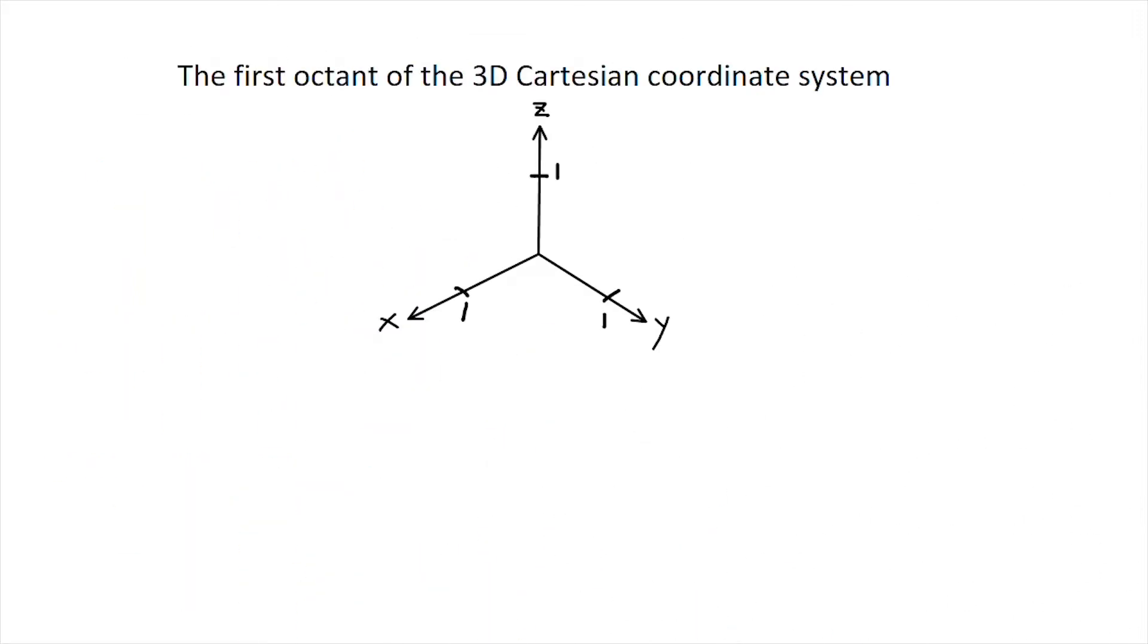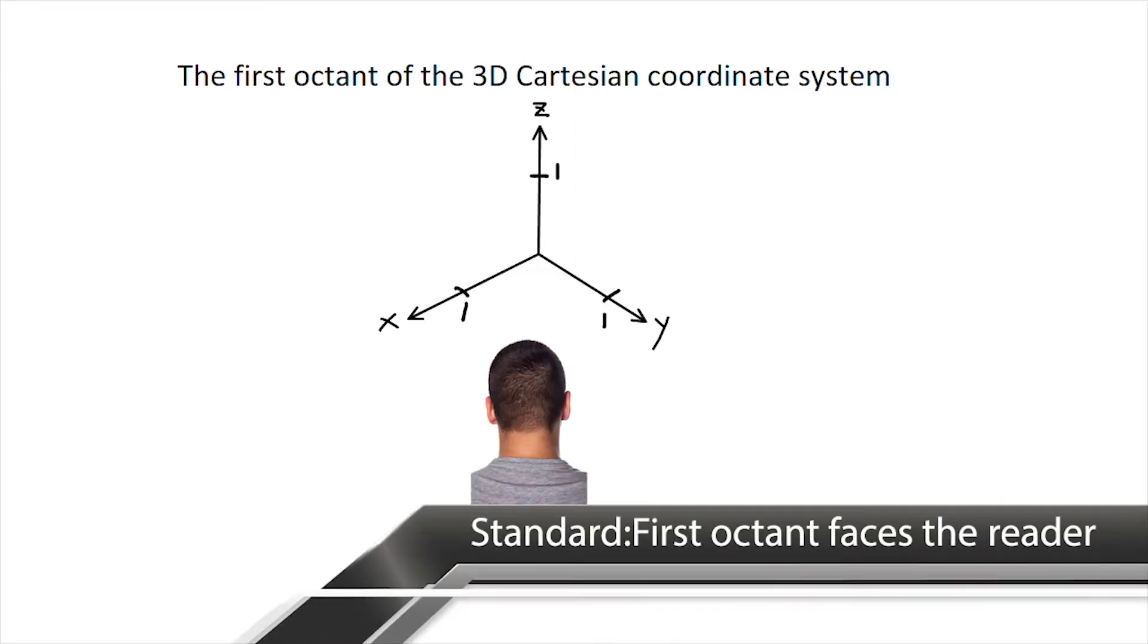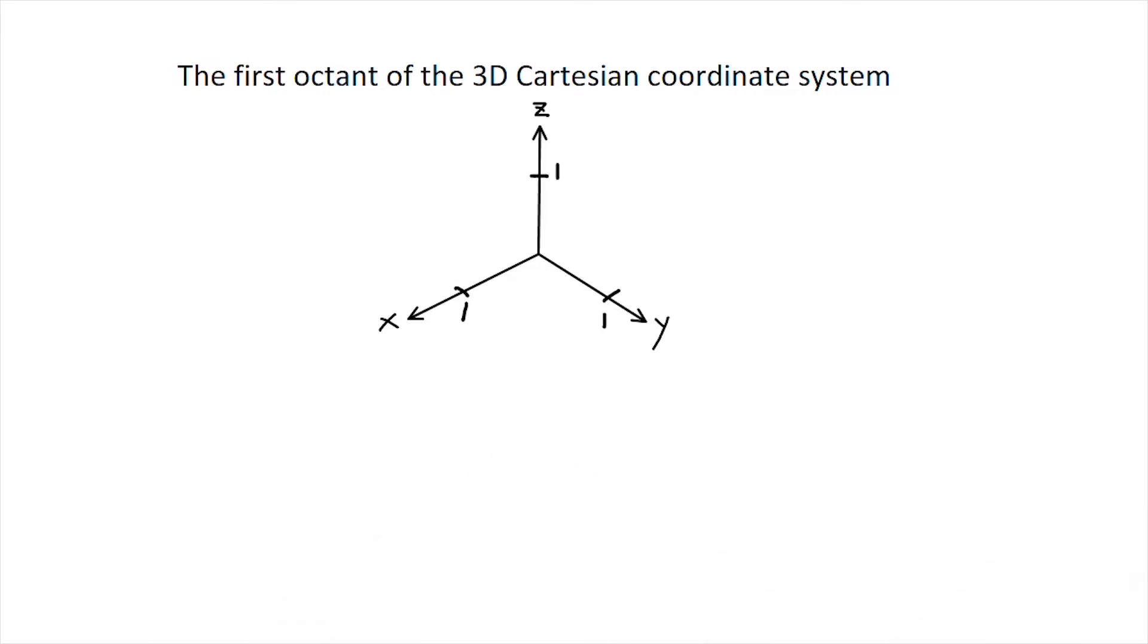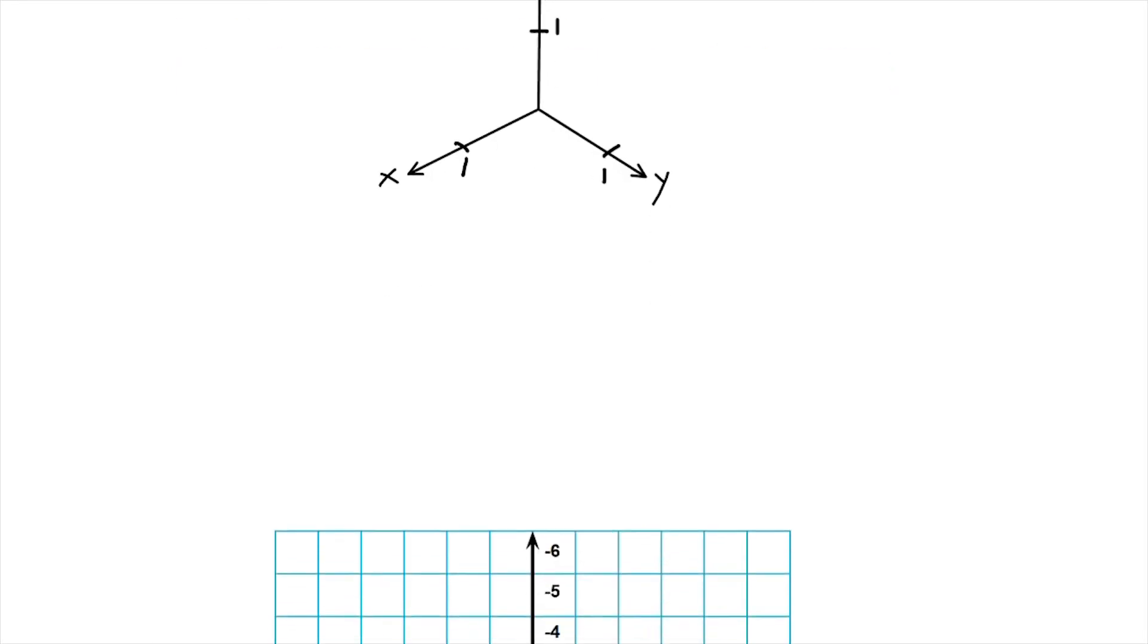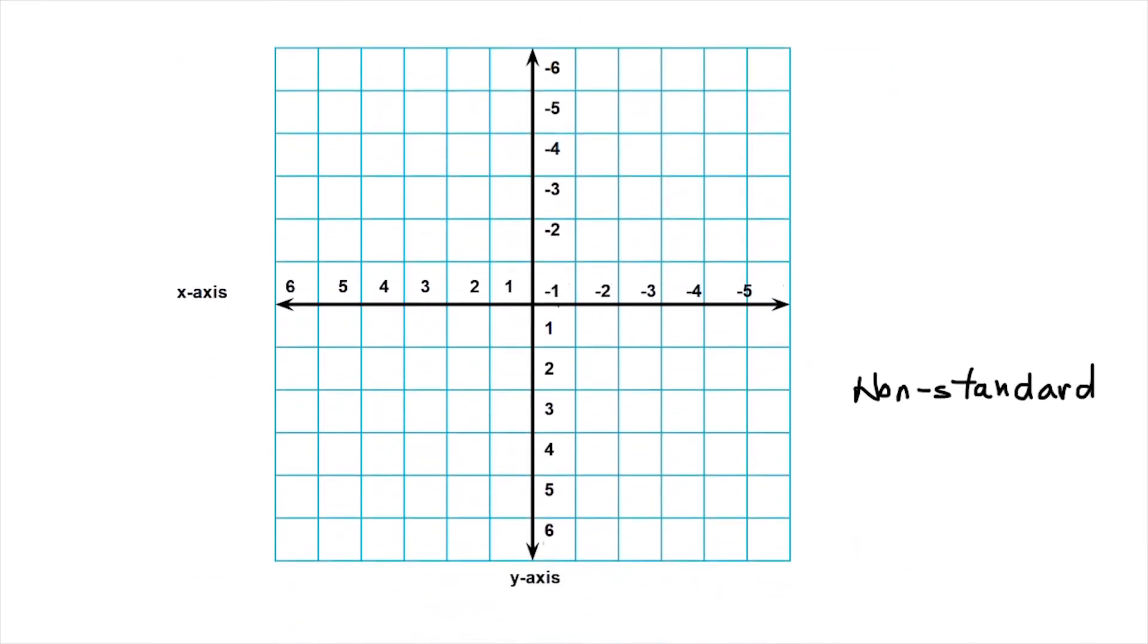Now we want to draw our graph with the first octant of the 3D Cartesian coordinate system facing us, or as though we are standing in the positive x, y axis and looking up to the z-axis. Now why are we strict about that? Well, let's consider the 2D Cartesian coordinate plane. Does this look correct to you? Because I can tell you it's not. It's non-standard.